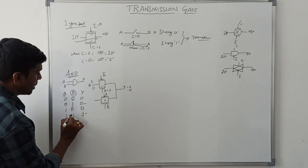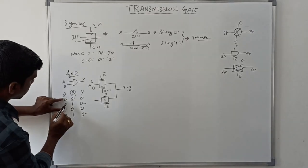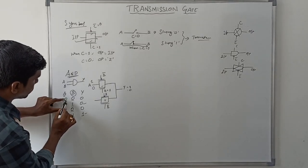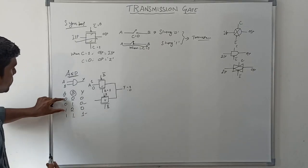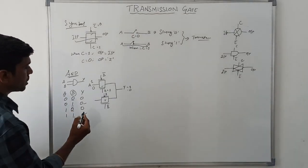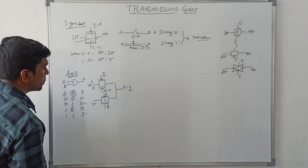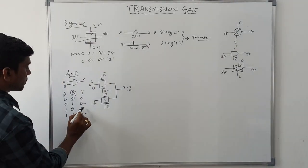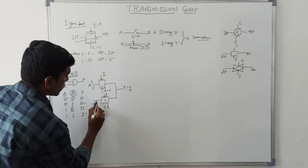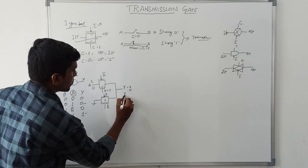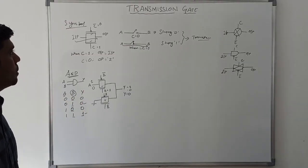For the second case, when B equals 0, irrespective of A value (whether A is 0 or 1), the output is always 0. The second transmission gate is connected to ground, so this 0 is always transferred to the output. This is the basic operation of AND gate using transmission gate.